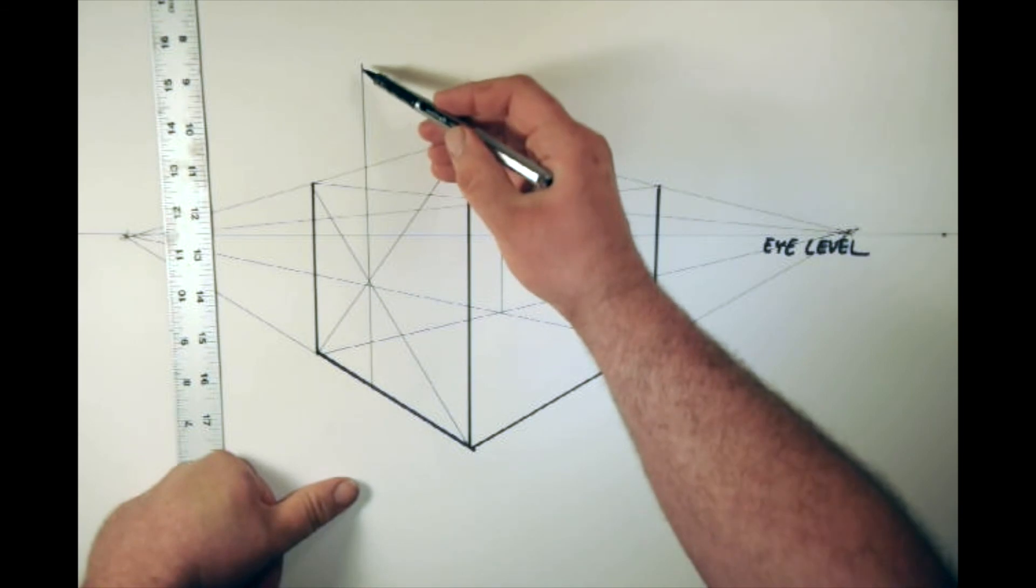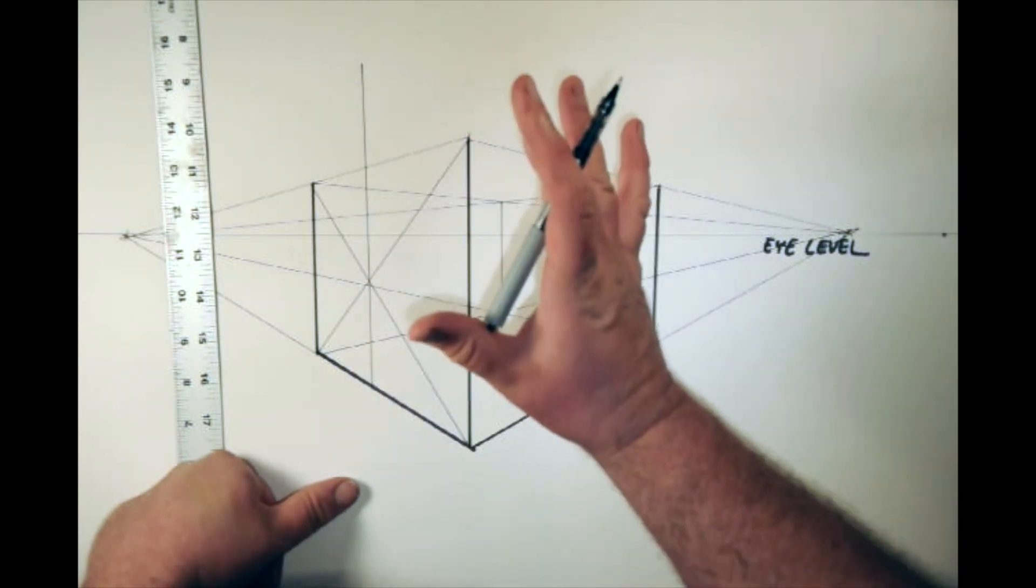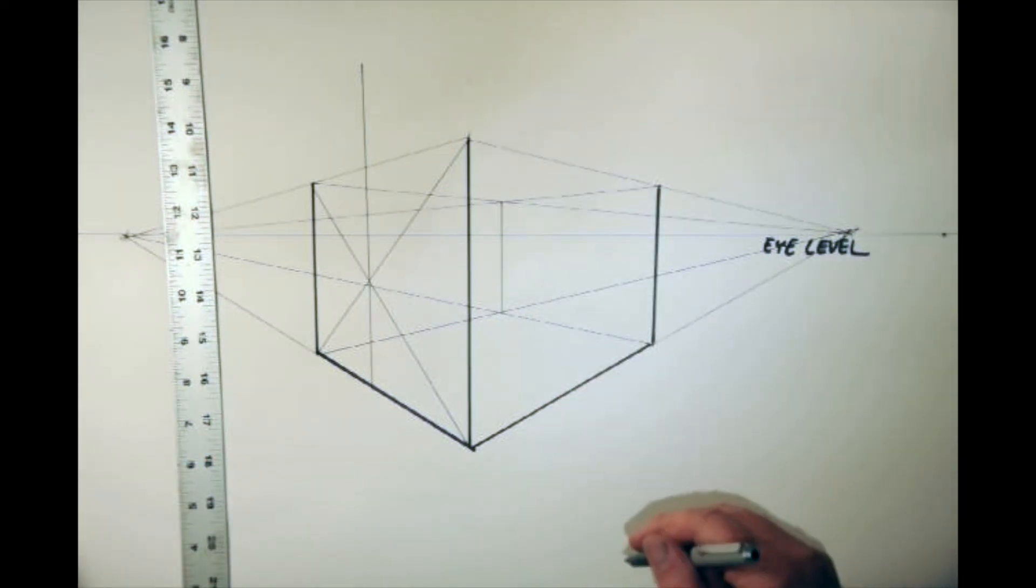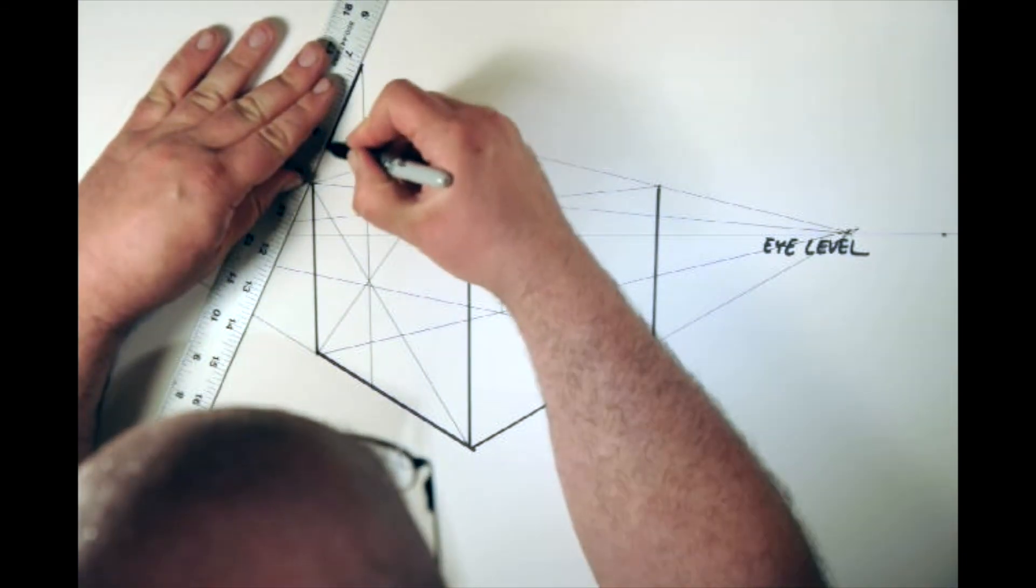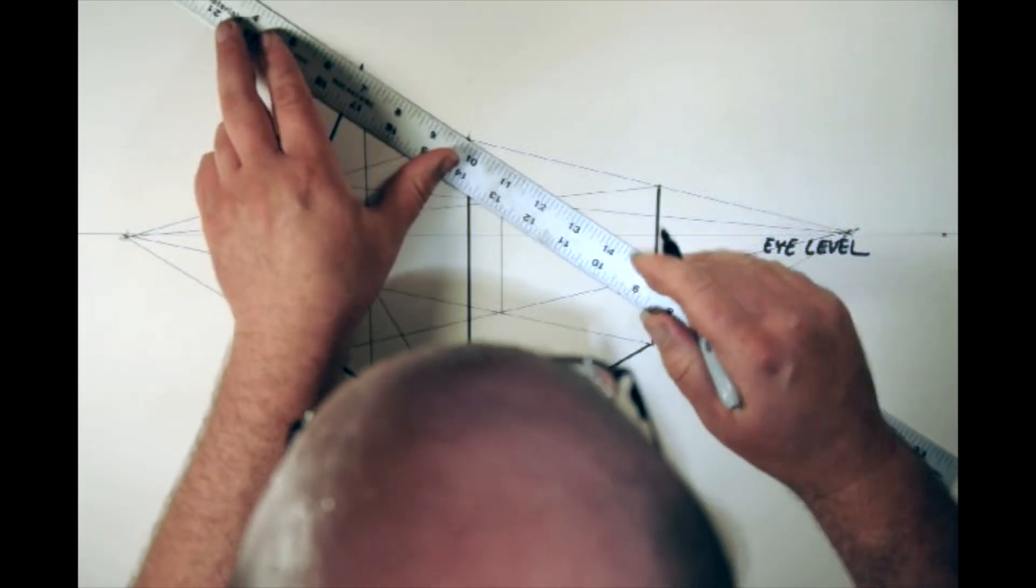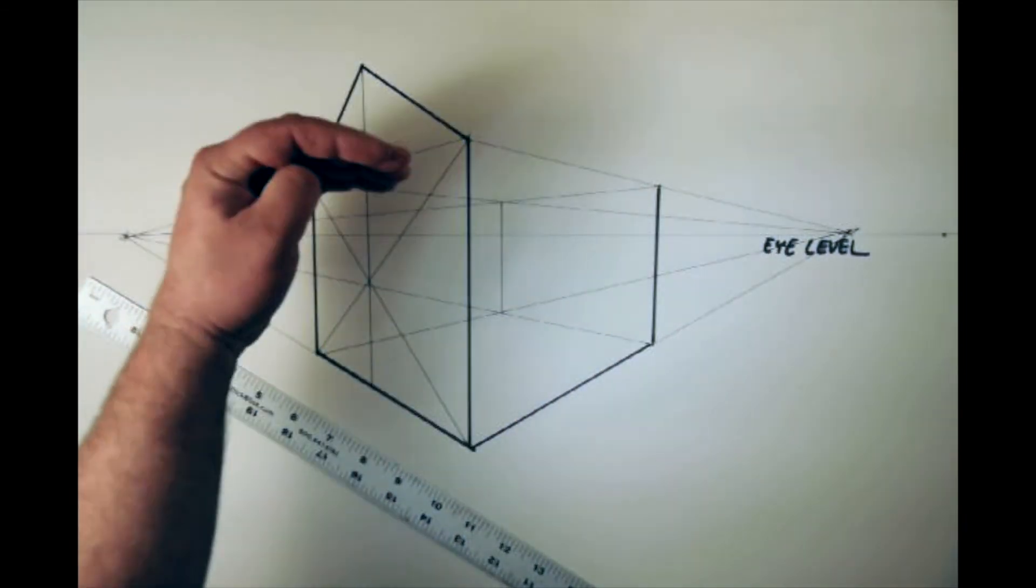And then I also need to do the same thing to the back, but we're going to wait just a second. Let's go ahead and connect these. Now these don't have to be in perspective. So what I'm going to do is just use my heavier Sharpie here and make a line there and make a line there. And that gives me the side.